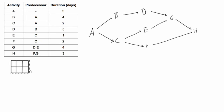Now all we need to do is redraw it with our typical nodes. As a reminder on the convention: in the square we have the activity with the duration, then we have early start, early finish, late start, and late finish. So we'll just draw the diagram right here.